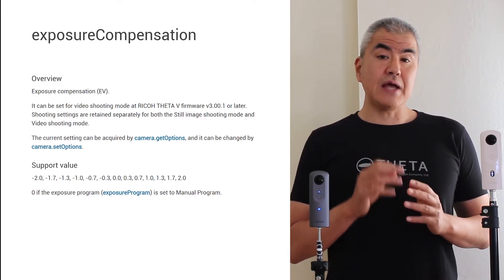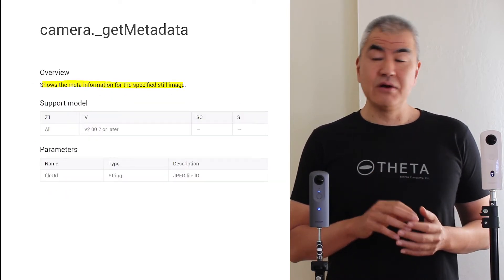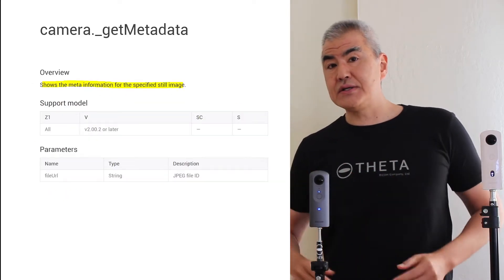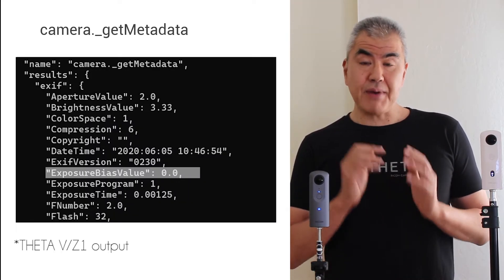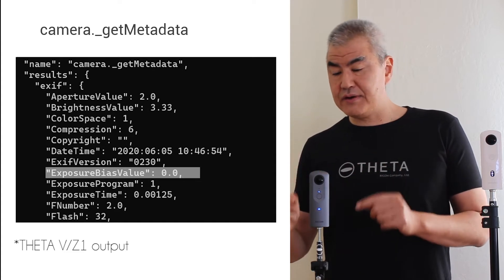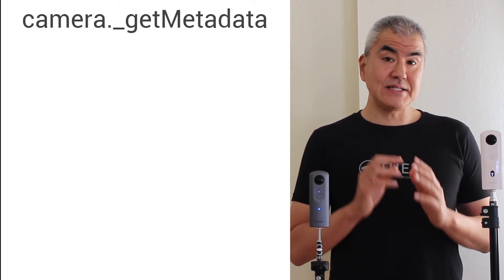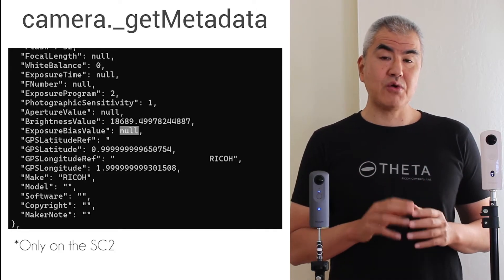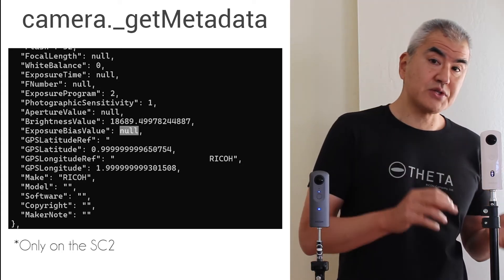If you use the API command get metadata, with the V and the Z1, you can see the exposure compensation bias. That value is equivalent to exposure compensation. However, with the SC2, the get metadata command is not returning the correct values for exposure compensation.